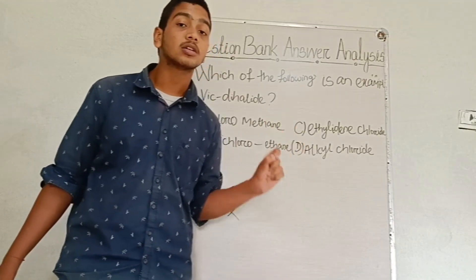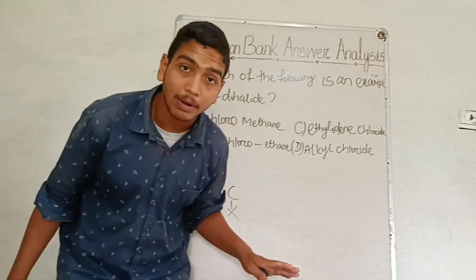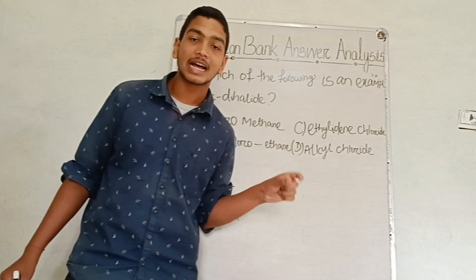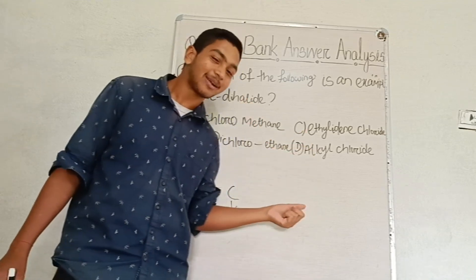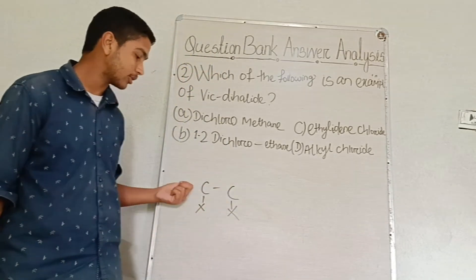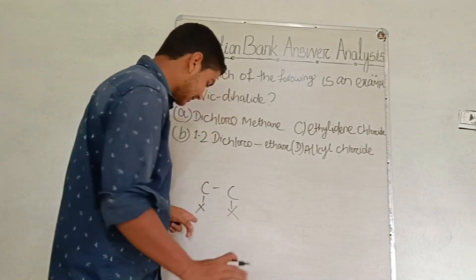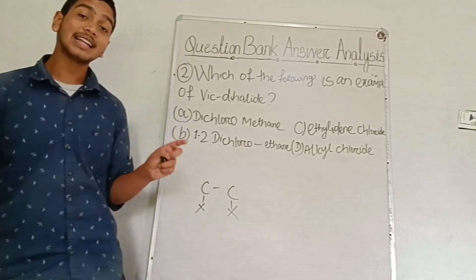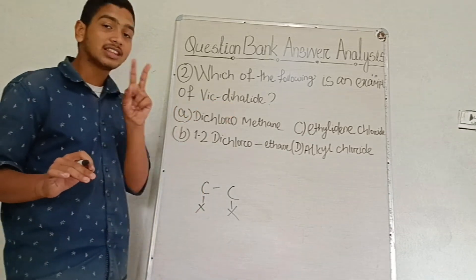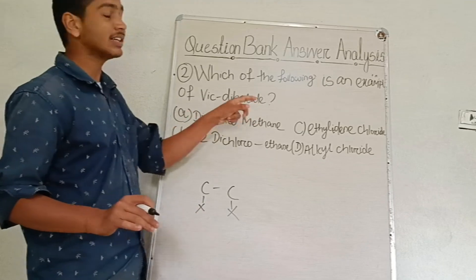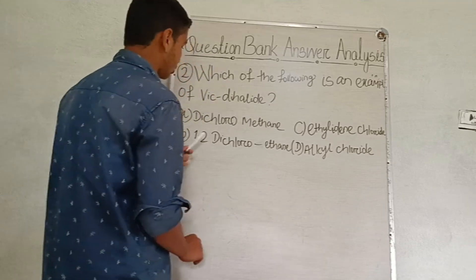It is carbon atom to adjacent carbon atom. The compound is those compounds in which halogen atoms are attached to carbon atom to adjacent carbon atom — to adjacent or vicinal carbon atoms. So we are going to get into the vicinal dihalogen. What are the vicinal dihalogen?